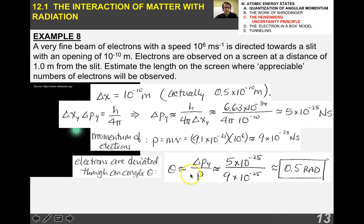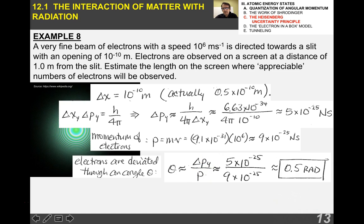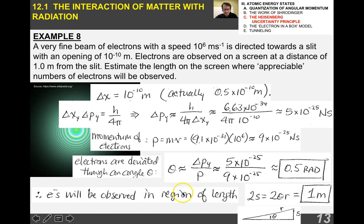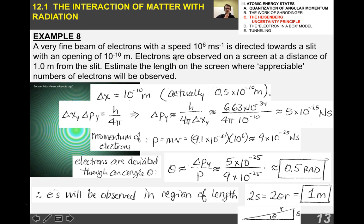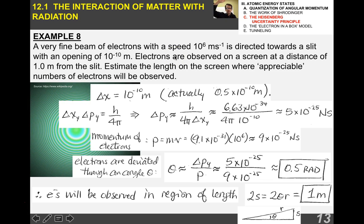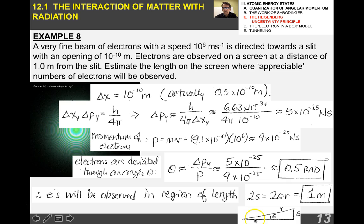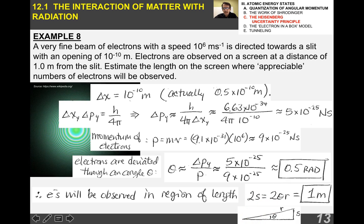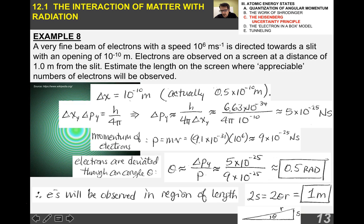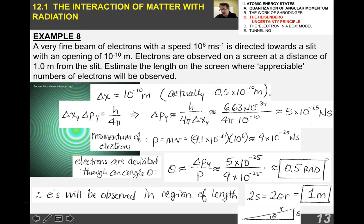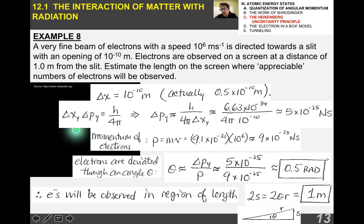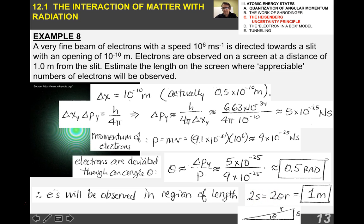The electrons are deviated through an angle, therefore, according to the same diagram on the previous slide, of delta P sub Y over P, which is a half a radian. Now because they're asking where they fan out and the length over which they'll be observed, we have to convert radians to a length. To do this, remember the definition of a radian. Here's the arc length. 2 theta is this arc length, 2S. If you solve this for S, you get that's about 1 meter.